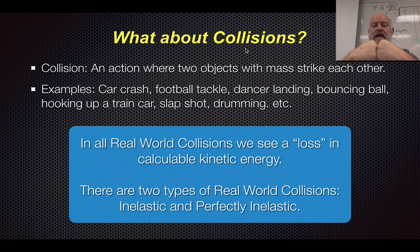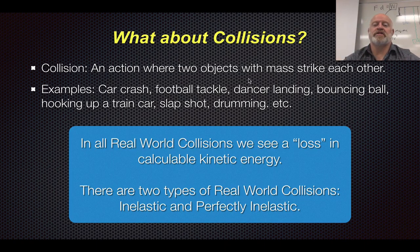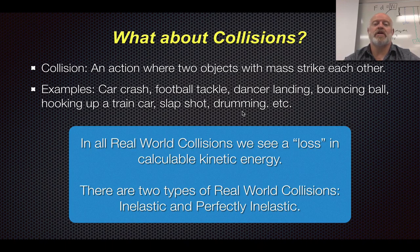So what happens when two objects collide with each other? A collision can be lots of things — a car crash or a football tackle, but also a dancer landing on the ground, bouncing a basketball, hooking two crane cars together, a slap shot in hockey, or even drumming with drumsticks. Those are all collisions where two different objects are hitting each other. One might be stationary and one might be moving, but there's still some sort of contact that creates that collision.